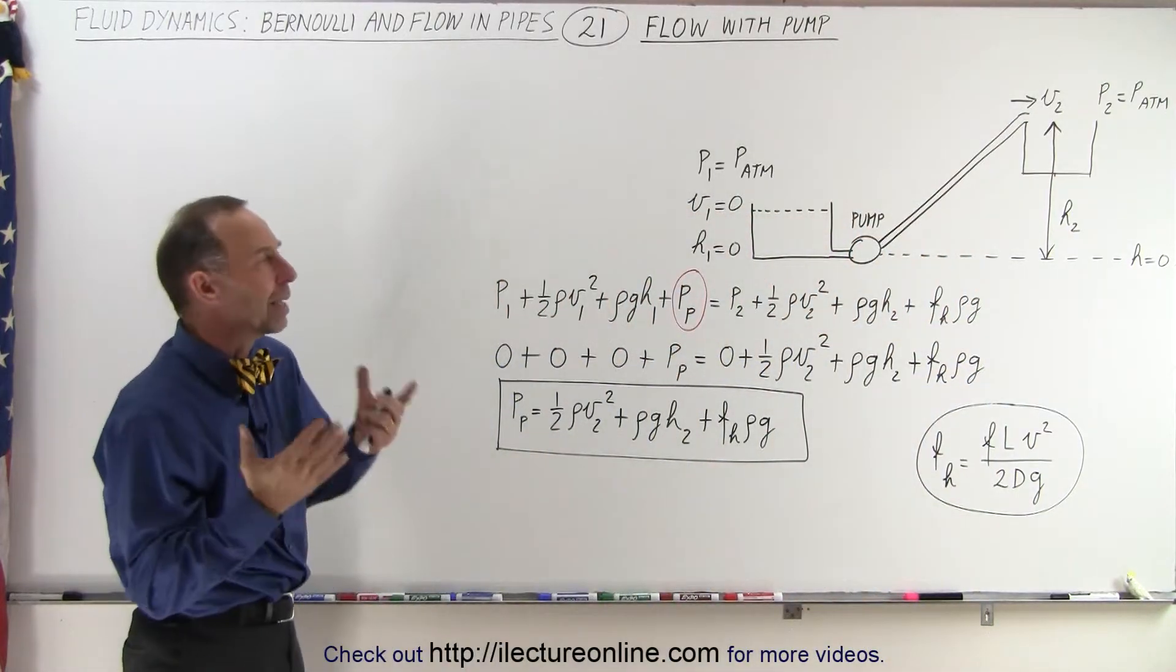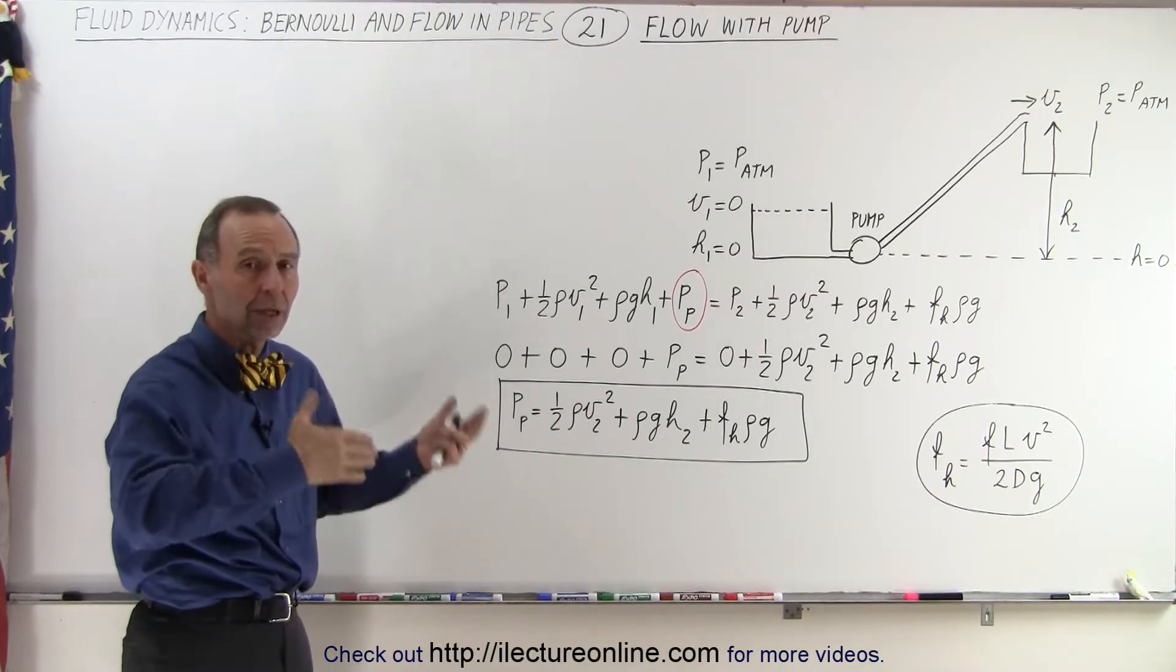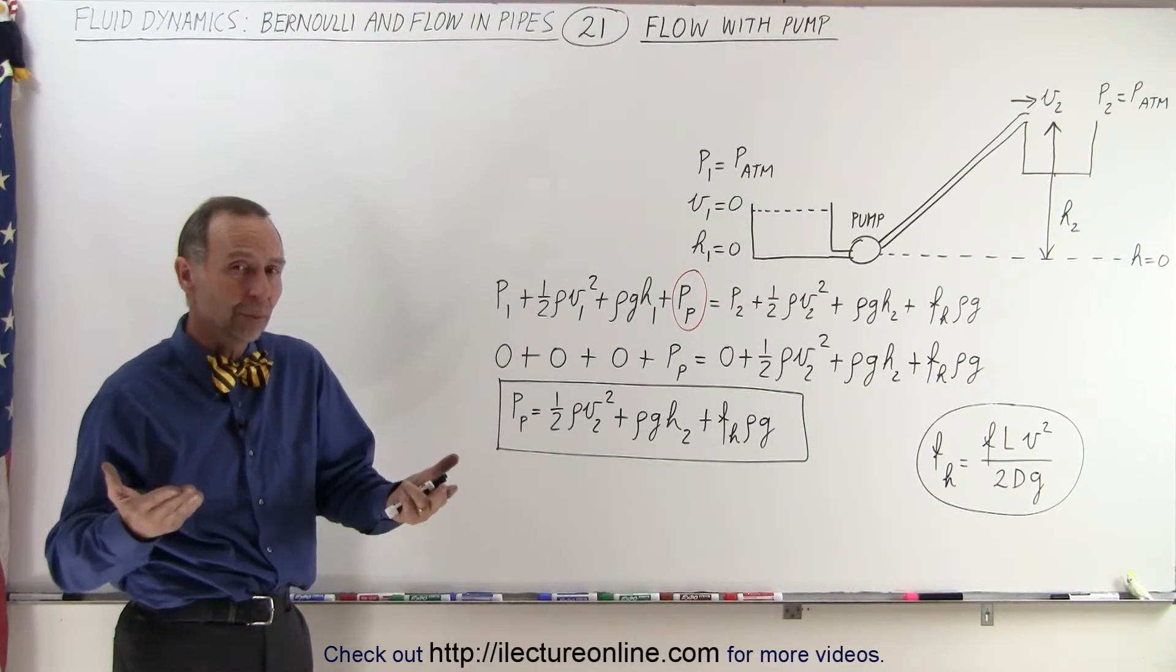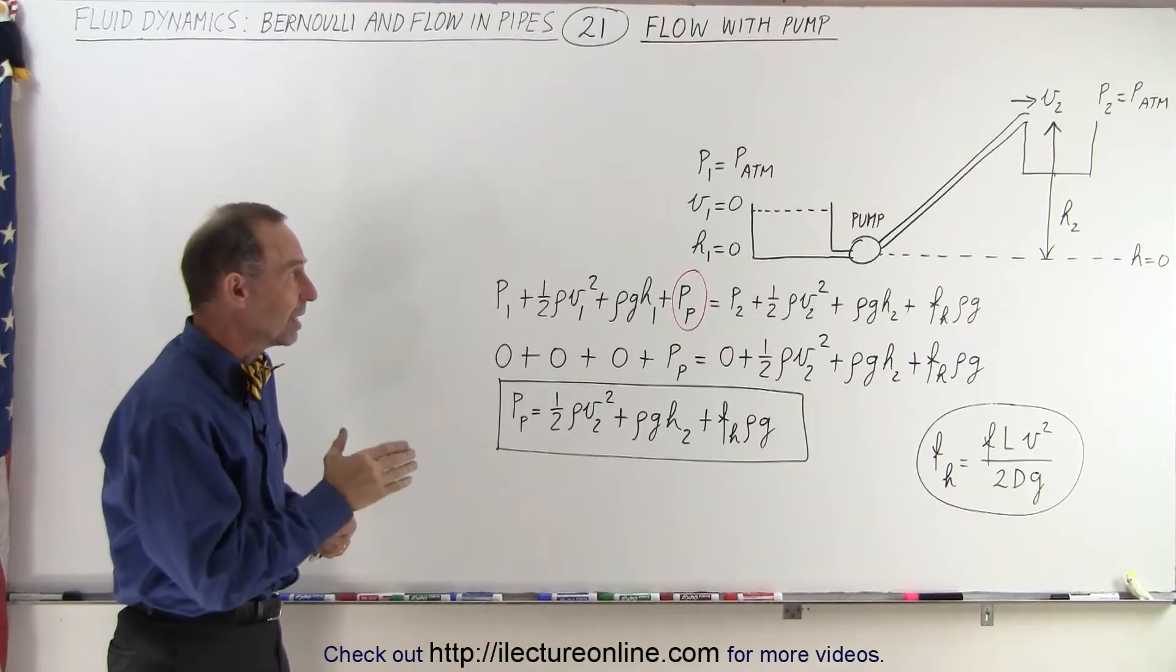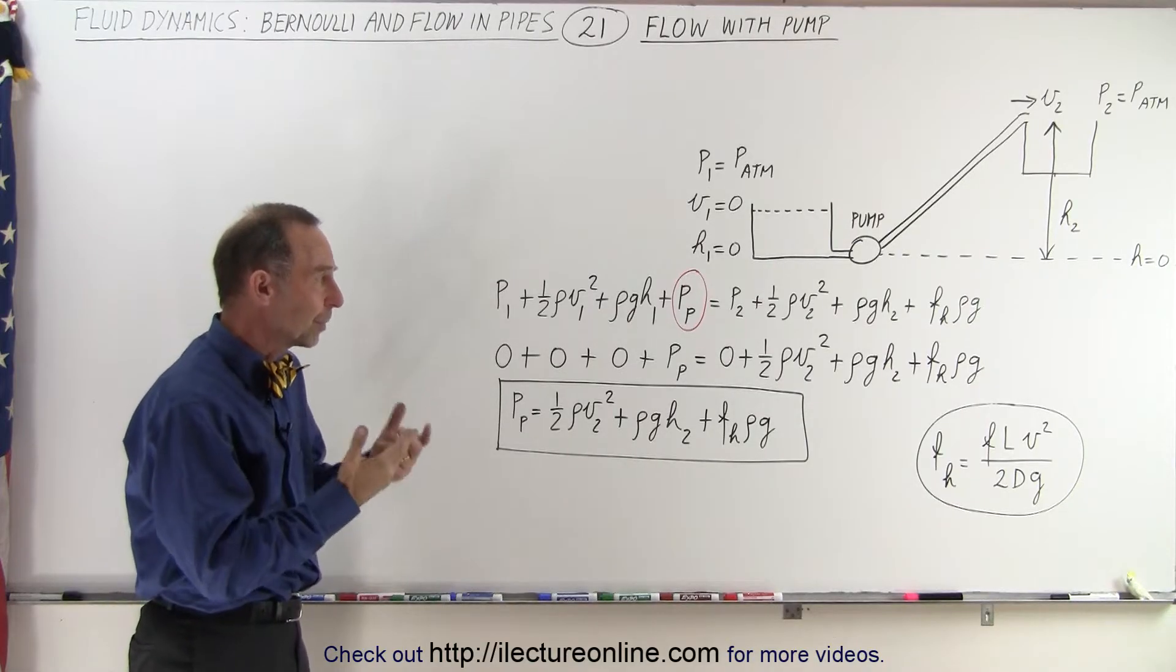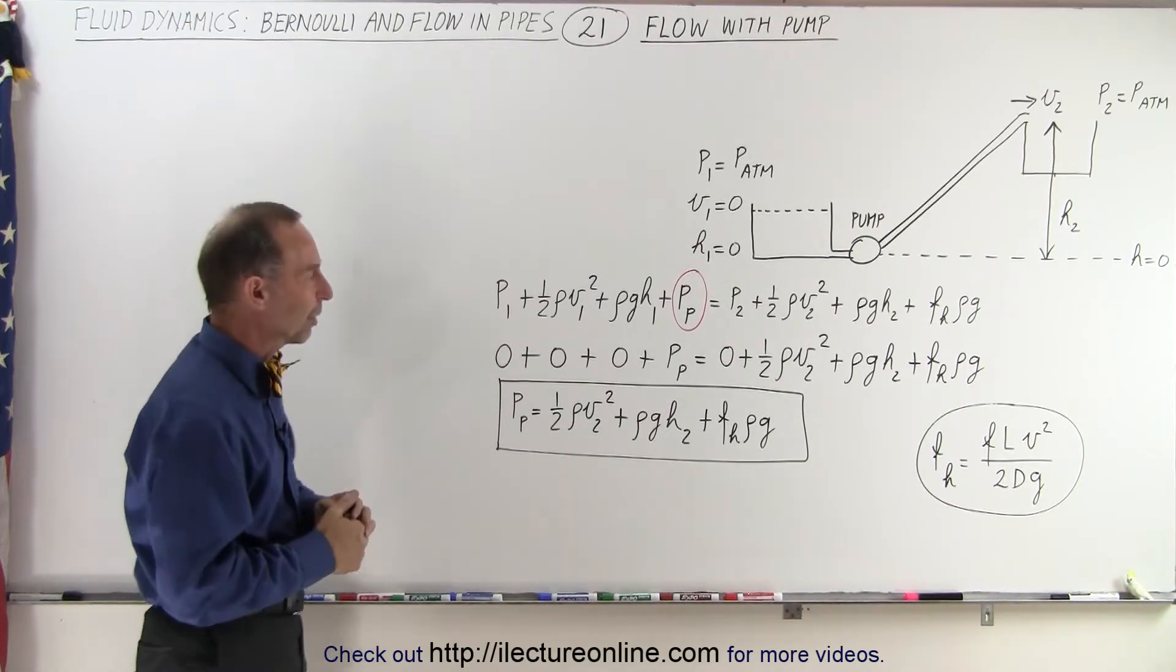If we eliminate atmospheric pressure we can then claim that p1 and p2 are equal to zero because we're going to take the gauge pressure instead of the total pressure.